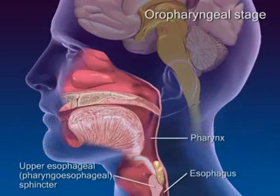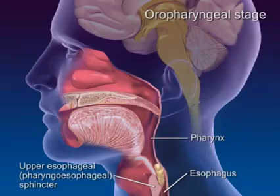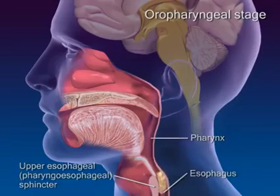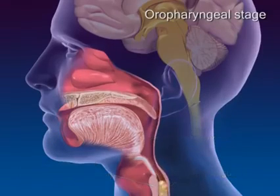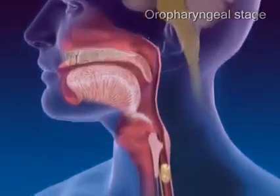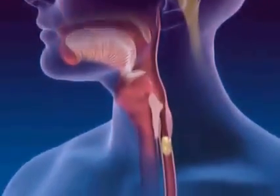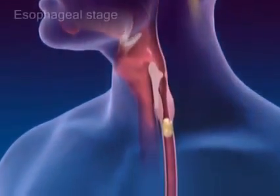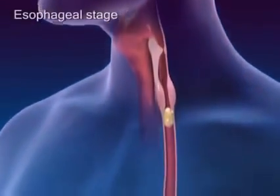As the upper esophageal sphincter relaxes, pharyngeal contractions drive the bolus into the esophagus. The oropharyngeal stage is done and breathing resumes.